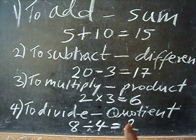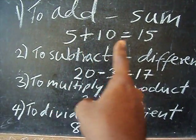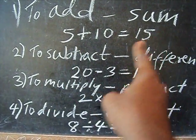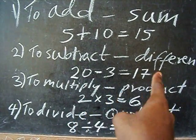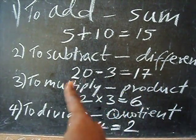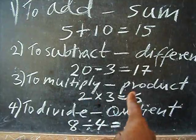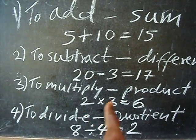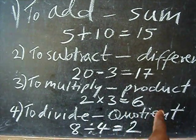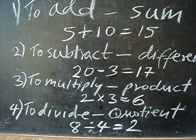So to summarize: to add means to find the sum, to subtract means to find the difference, to multiply is to find the product of two numbers, and to divide is to find the quotient of two numbers.